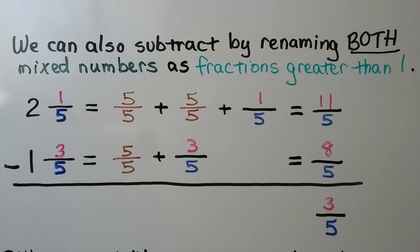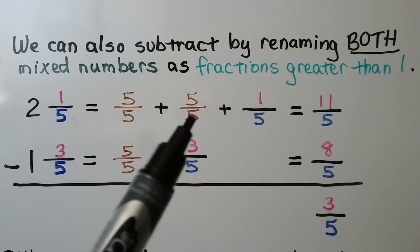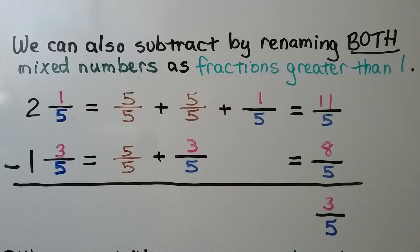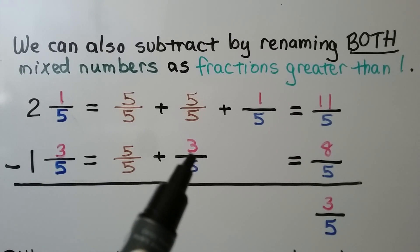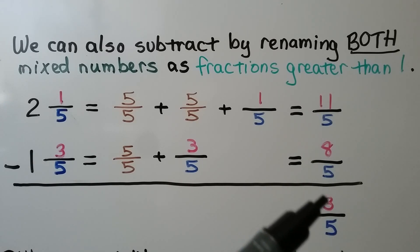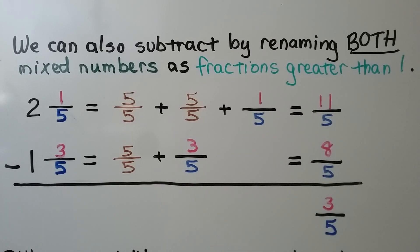We can also subtract by renaming both mixed numbers as fractions greater than 1. 2 and 1 fifth is 5 fifths plus 5 fifths plus 1 fifth — that's 11 fifths. 1 and 3 fifths is 5 fifths plus 3 fifths — that's 8 fifths. 11 minus 8 is 3. We write it over that common denominator 5 — it's 3 fifths.